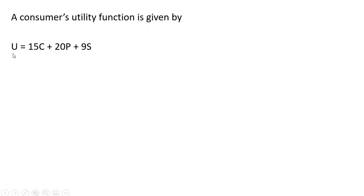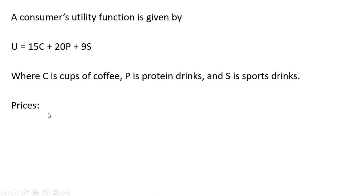The consumer's utility function is given by the following. Here's our perfect substitutes utility function. It is a function of three goods: C is cups of coffee, P is protein drinks, and S represents sports drinks.